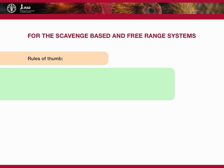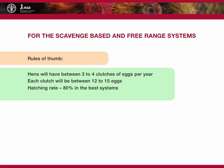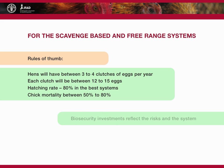There are a few rules of thumb regarding scavenge-based and free-range systems. Hens will have between three to four clutches of eggs per year, and each clutch will be between 12 to 15 eggs. The hatching rate will be 80 percent in the best systems, and chick mortality will be between 50 percent and 80 percent.